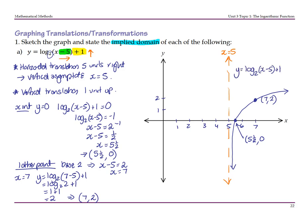The question also asked for the implied domain. That's dictated by our asymptote, and it will be x is an element of (5, infinity), or x is greater than 5. Another option for a second point would be to get log base 2 of 1: set x minus 5 equals 1, so x equals 6, and since log base 2 of 1 is zero, that gives the point (6, 1).